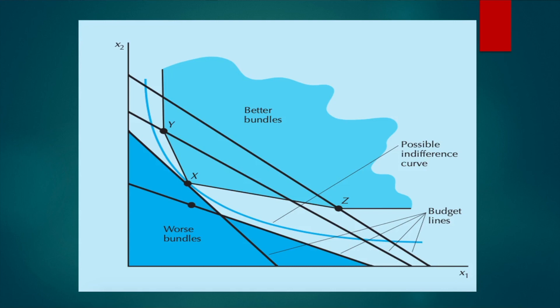This is because the indifference curve is the locus of combinations of points which give the same level of satisfaction to the consumer. So the indifference curve shouldn't lie in any of the shaded areas — it is tightly trapped in the middle of the shaded regions. In the next video, we will move on to the weak axiom of the revealed preference theory. Thank you.